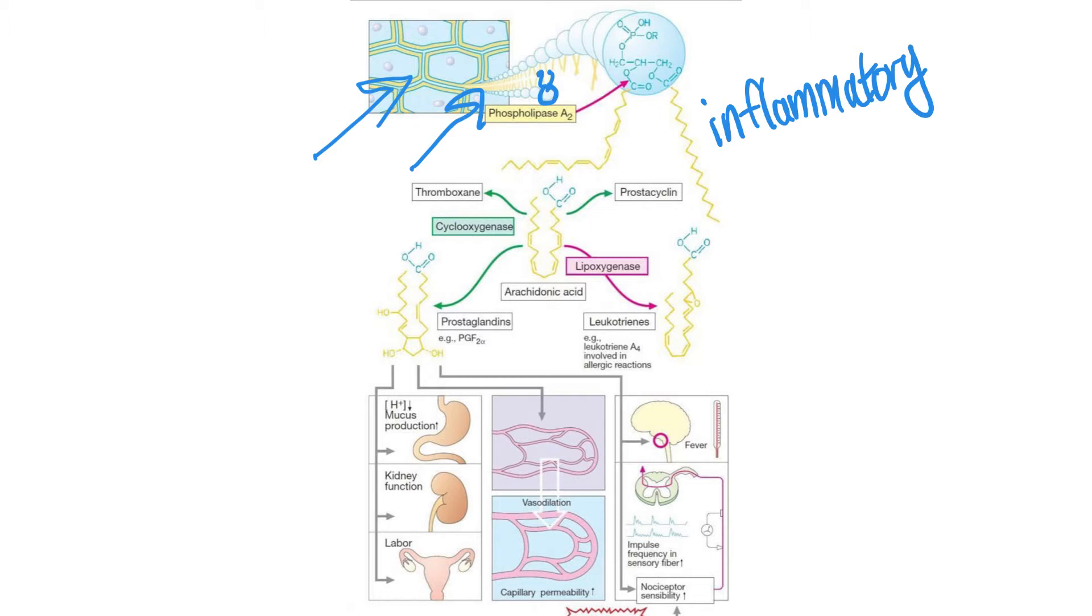When a cell becomes damaged, we now have phospholipid remnants out in the body. The body needs to deal with these and what it will do is break it down so that it can be removed from systemic circulation. The enzyme that does this is called phospholipase A2, or PLA2 for short. Phospholipase A2 breaks down phospholipids into arachidonic acid. Generally, if arachidonic acid is around, it is considered a pro-inflammatory substance.